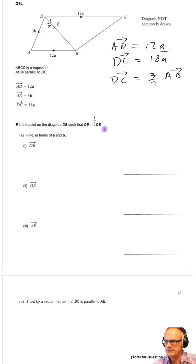We want to find DB in terms of a and b. DB is going to be minus 3b going along here and plus 12a gets us from D to B using just a and b. So we can see that's just going to be equal to 12a minus 3b.